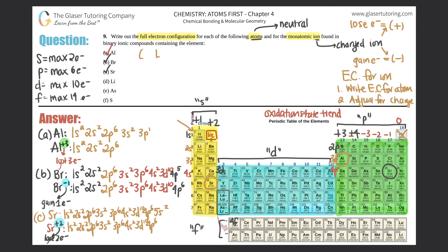Part d — lithium. For the atom: 1s², 2s¹. Lithium is in group 1 so it's Li⁺, meaning it loses 1 electron. Between the principal quantum numbers 1 and 2, you lose from the higher number. So remove the 2s¹ electron — the entire 2s subshell goes — leaving just 1s². This is the same electron configuration as helium.